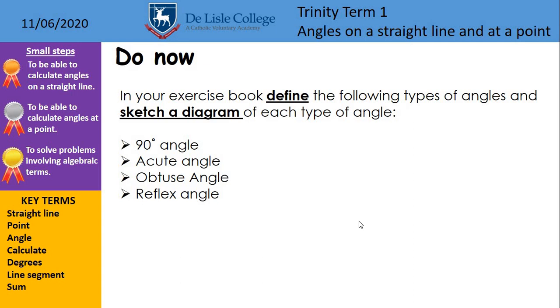G'day 7 Mathematicians and welcome to another week of lessons. We've got three PowerPoints to go through this week, so make sure you work your way through all those three and the appropriate Hegarty tasks. Today, if you can just draw a line under previous work, today's title is angles on a straight line and at a point, and then pop the date on, and your do now task is written on the screen for you to do.